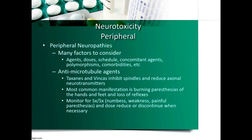Peripheral neuropathies have many factors to consider: dose, schedule, concomitant agents, and patient comorbidities. Any anti-microtubule agent — such as taxanes and vincas — can potentially lead to peripheral neuropathies. Symptoms may develop after the first cycle or be delayed until well after chemotherapy is completed. The most common manifestation is burning paresthesias of the hands and feet, and partial or complete loss of reflexes — difficulty buttoning a shirt, unlocking a door, or using zippers.